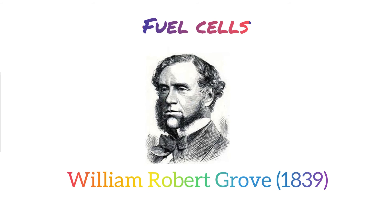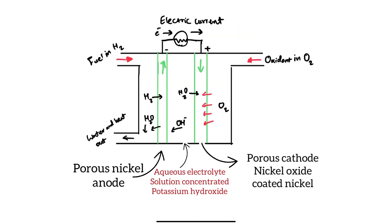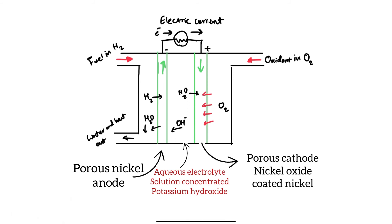Fuel cells were introduced in 1839 by William Robert Grove, using inert electrodes with hydrogen and oxygen, generating electrons more stably with a constant supply of reactants that will not break down. In past battery types, the solid electrodes would over time block the flow of charge through the cell. However, in a fuel cell, both reactants and products are gaseous, liquid, or aqueous, so they will not block the flow of electrons or charge through the cell.